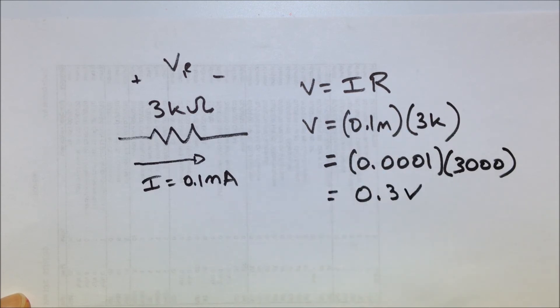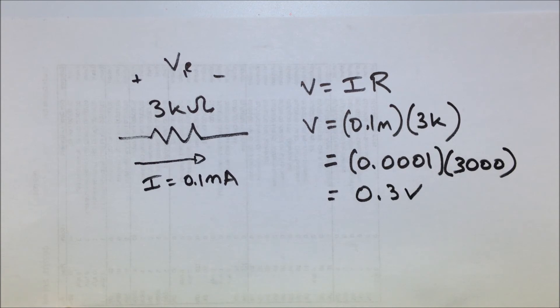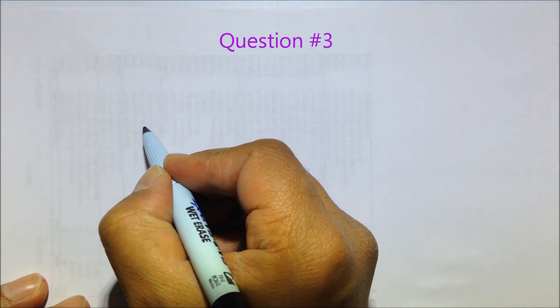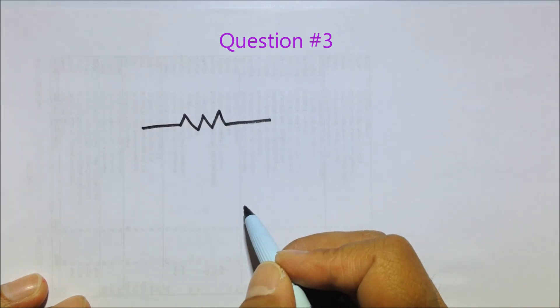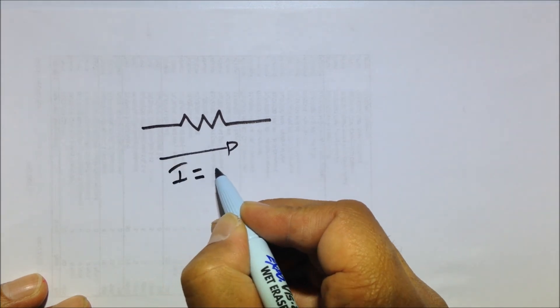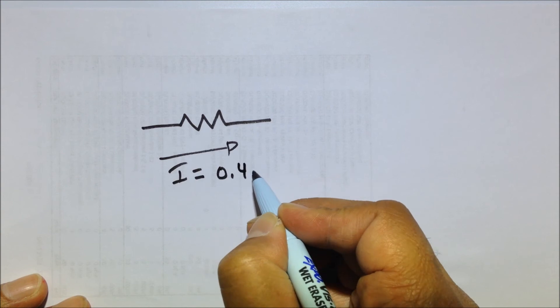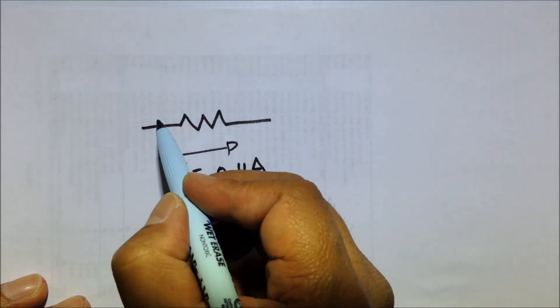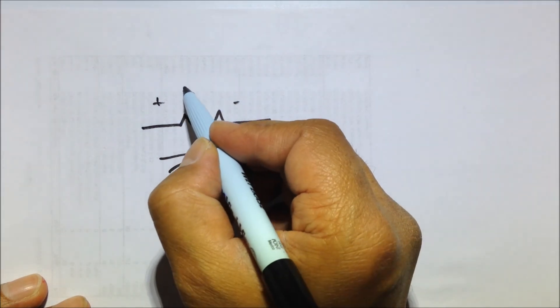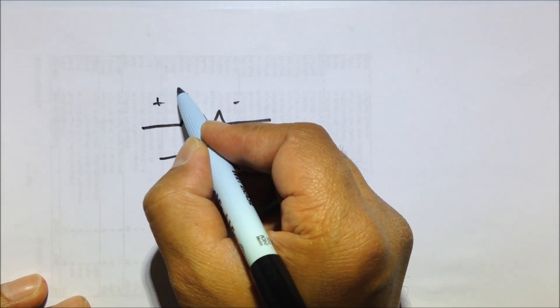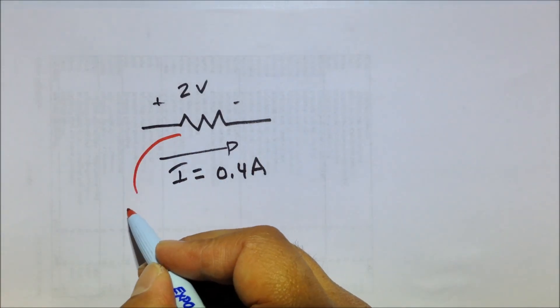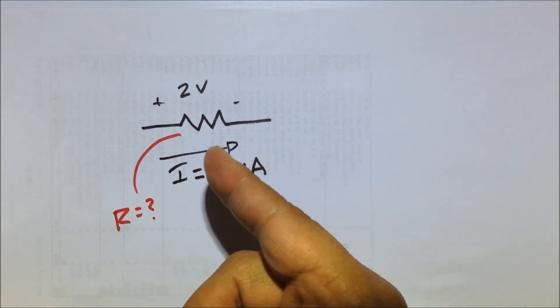So we've solved for when we don't know the current, we've solved for when we didn't know the voltage, let's solve for when we don't know the resistance. So let's say we have a resistor that we're looking at within a circuit, and we know that the current running through it is 0.4 amps, and we know that the voltage drop across the resistor is 2 volts, but we don't know what R is. We don't know what the resistance is.